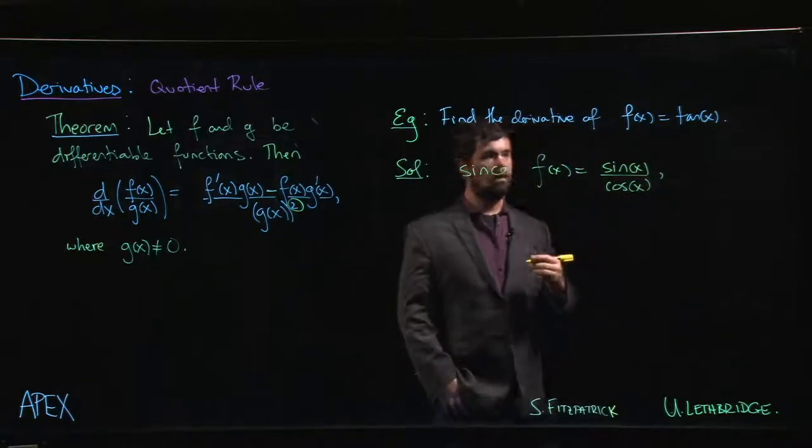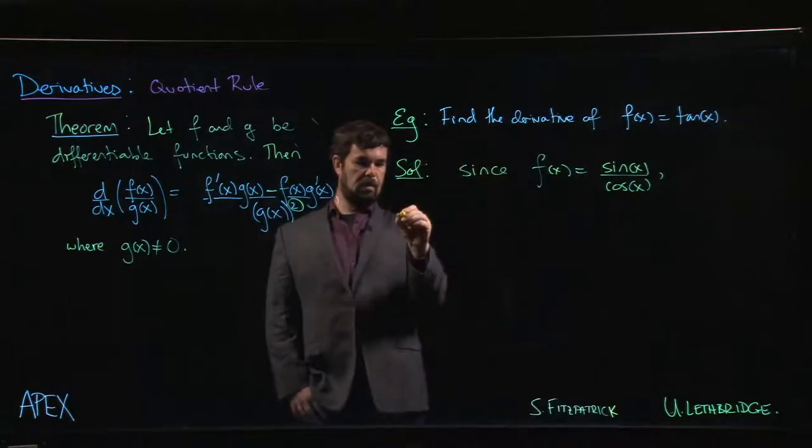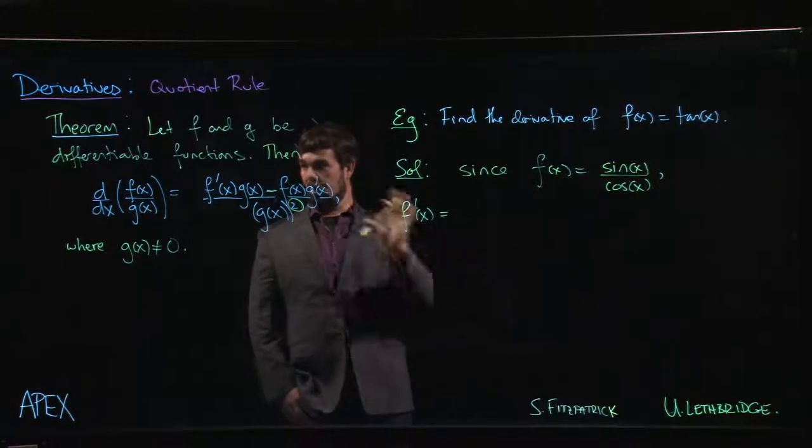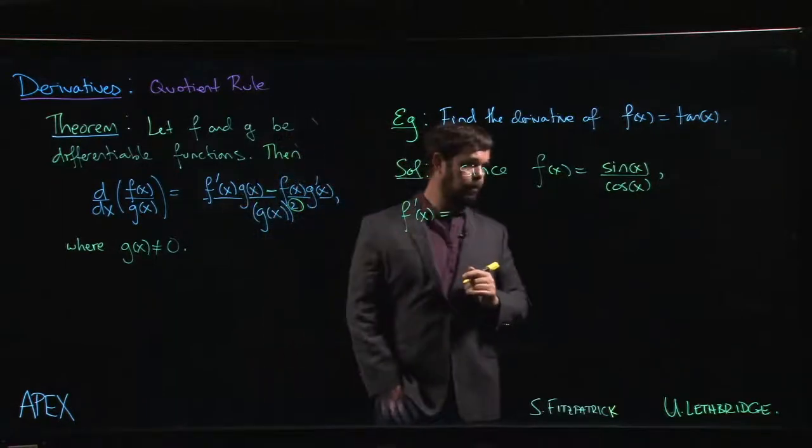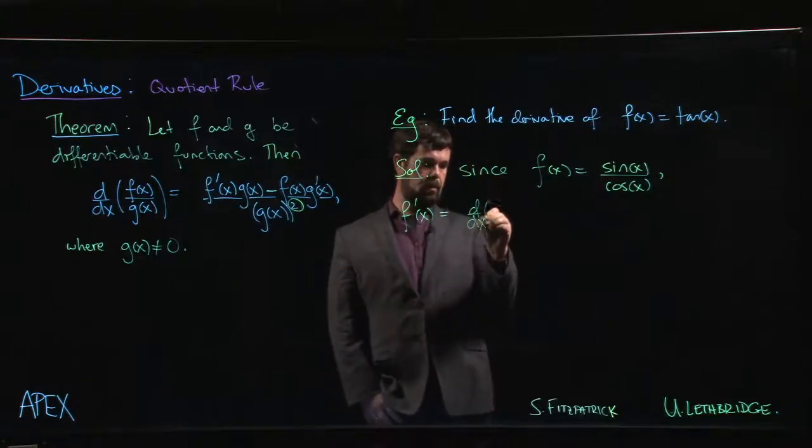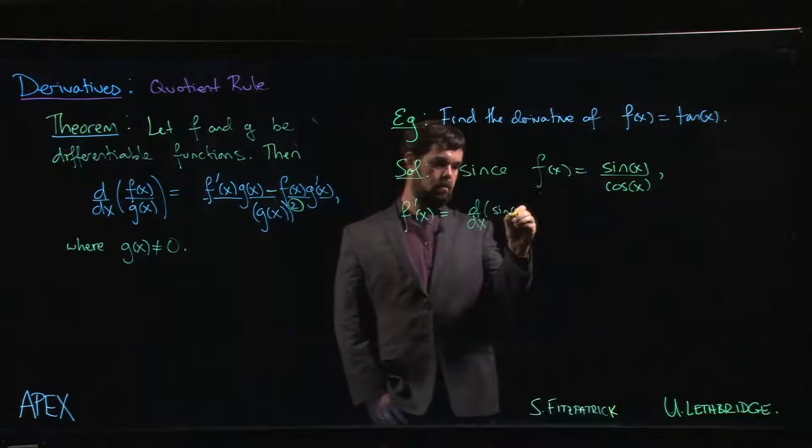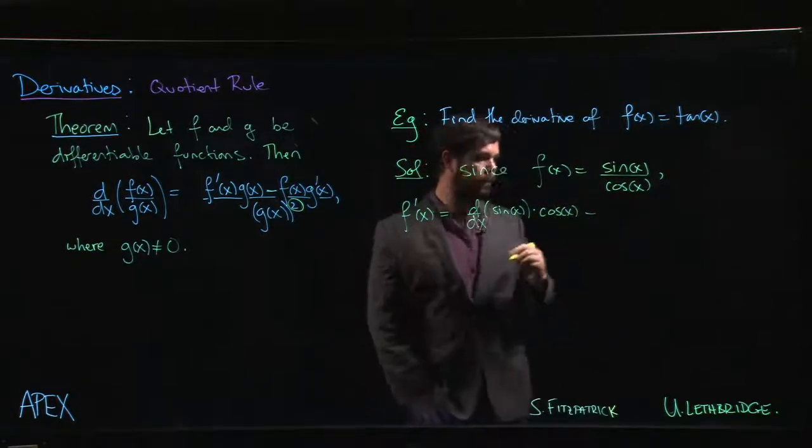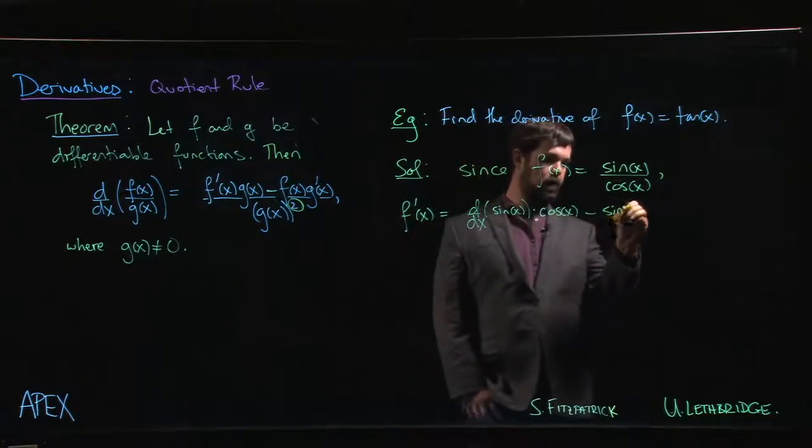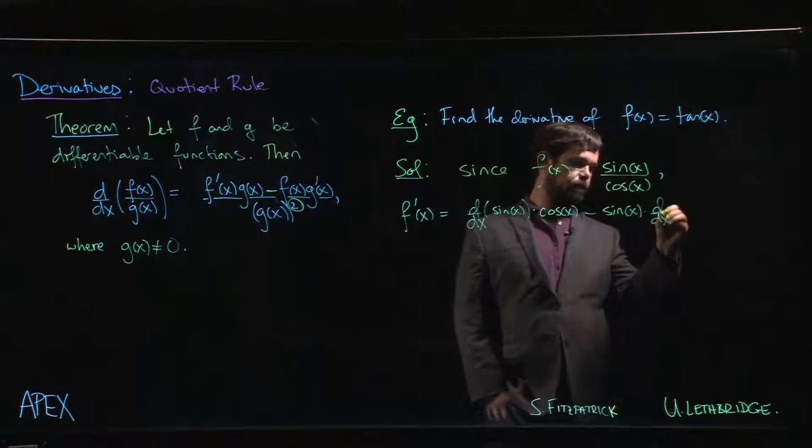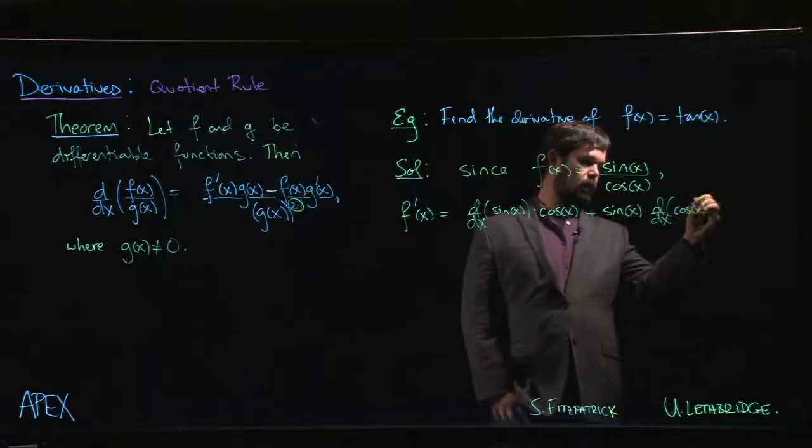f'(x) is going to be, according to the quotient rule, the derivative of the top times the bottom, minus the top times the derivative of the bottom, and the whole thing goes over the bottom squared.